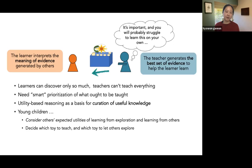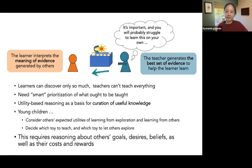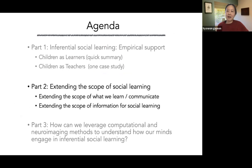What this implies is that while learners are great at discovering and exploring, they can only discover so much, and teachers cannot teach everything. So we need smart prioritization of what needs to be taught. This kind of utility-based reasoning can be a basis for curation of useful knowledge over generations if you extend this reasoning to how cultural knowledge might be transmitted.